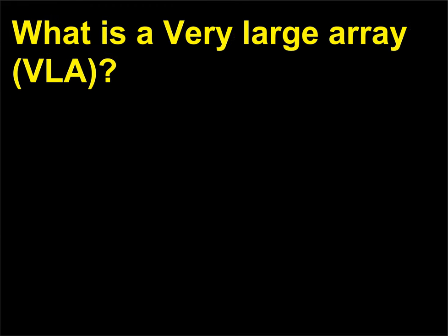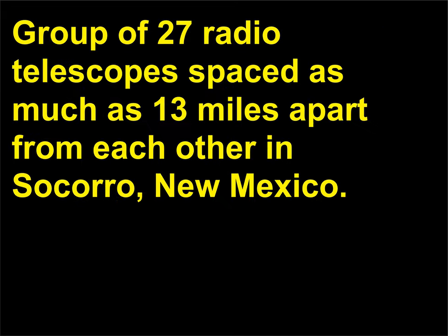What is a Very Large Array (VLA)? The VLA is a group of 27 radio telescopes spaced as much as 13 miles apart from each other in Socorro, New Mexico.